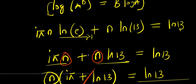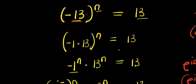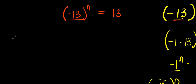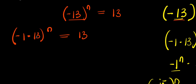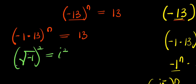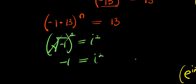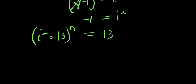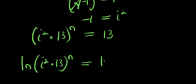So this is our solution from Method 1. Now let's consider another method. We have negative 13 power n equals 13. We again replace negative 13 with negative 1 times 13, so we have negative 1 times 13, power n equals 13. Now recalling the identity: square root of negative 1 equals i, so squaring both sides gives negative 1 equals i power 2. We replace negative 1 with i power 2, giving i power 2 times 13, power n equals 13. Applying natural log to both sides: natural log of i power 2 times 13 power n equals natural log of 13.